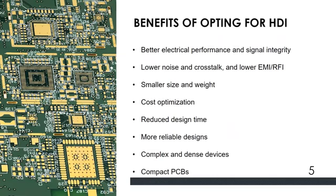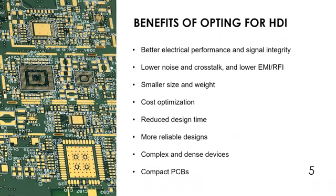Then we come to what are the benefits of opting for HDI. Better electrical performance and signal integrity. When you introduce microvias, you have a lot of interconnections, so your traces become shorter. Thereby, the electrical performance increases because of less inductance and capacitance — inductance and capacitance get reduced. And also, because of these smaller wires, you don't have the stubs.